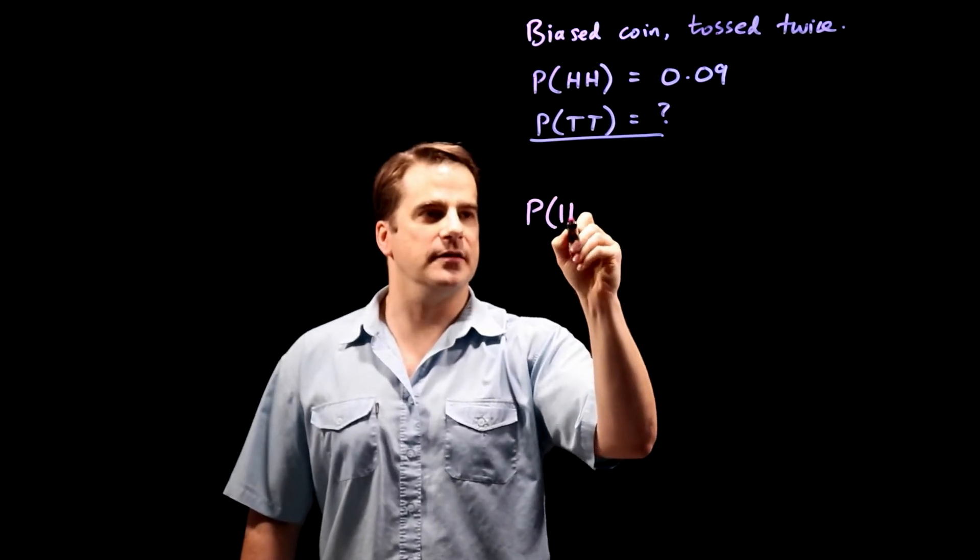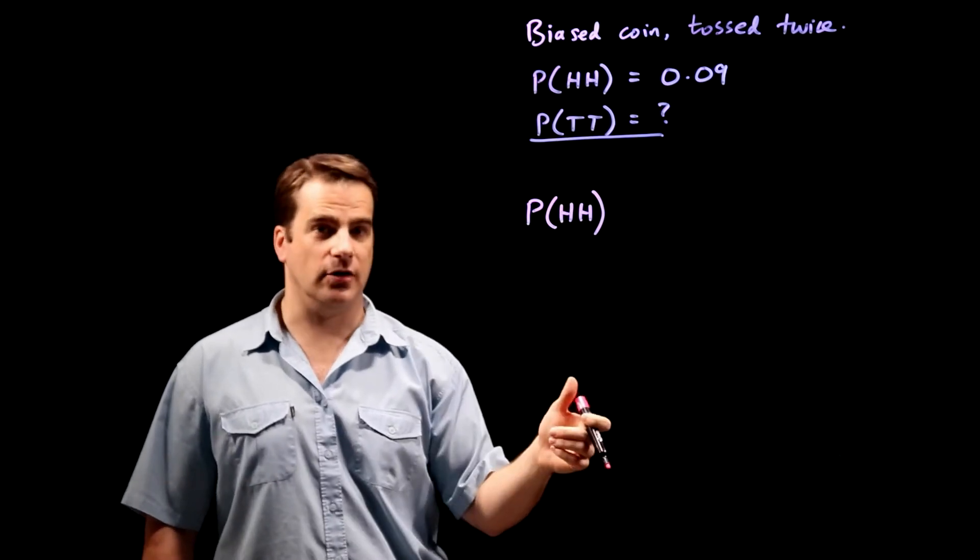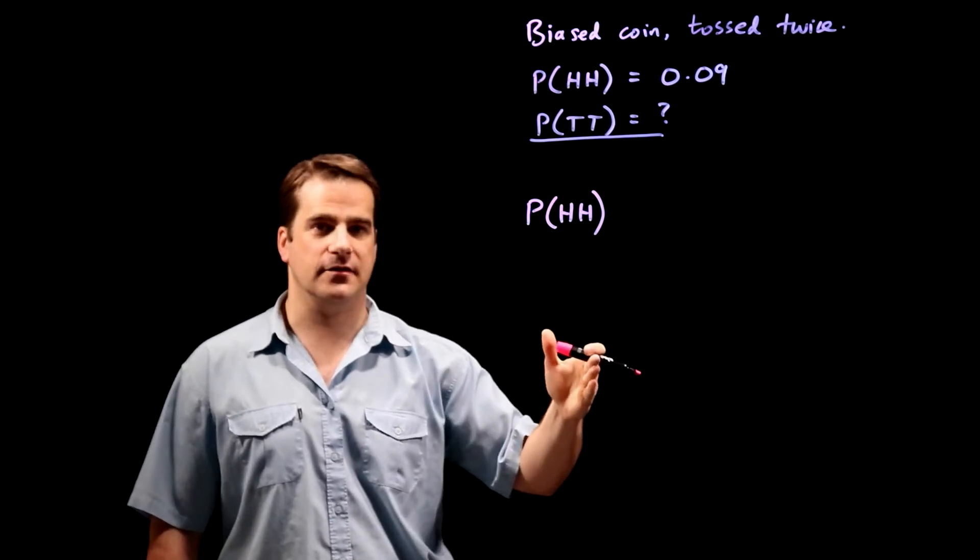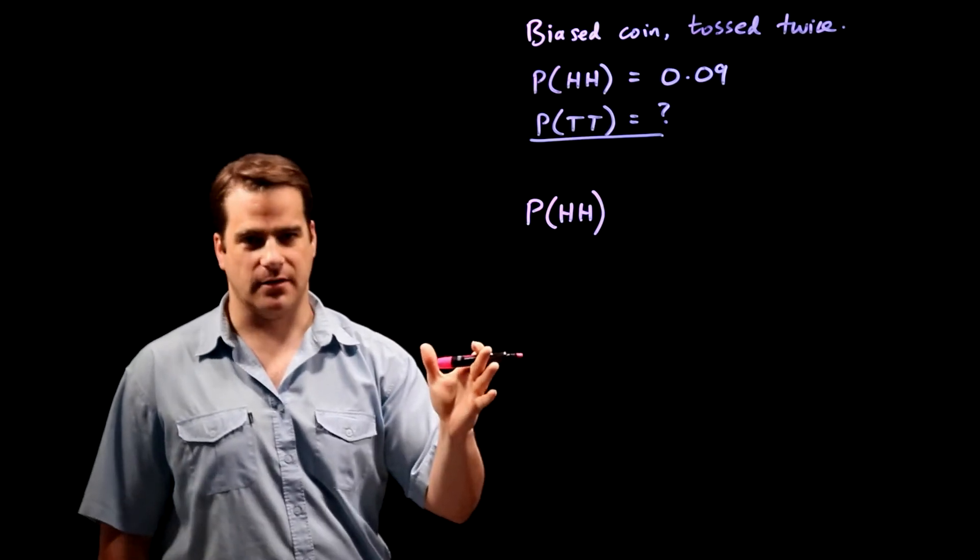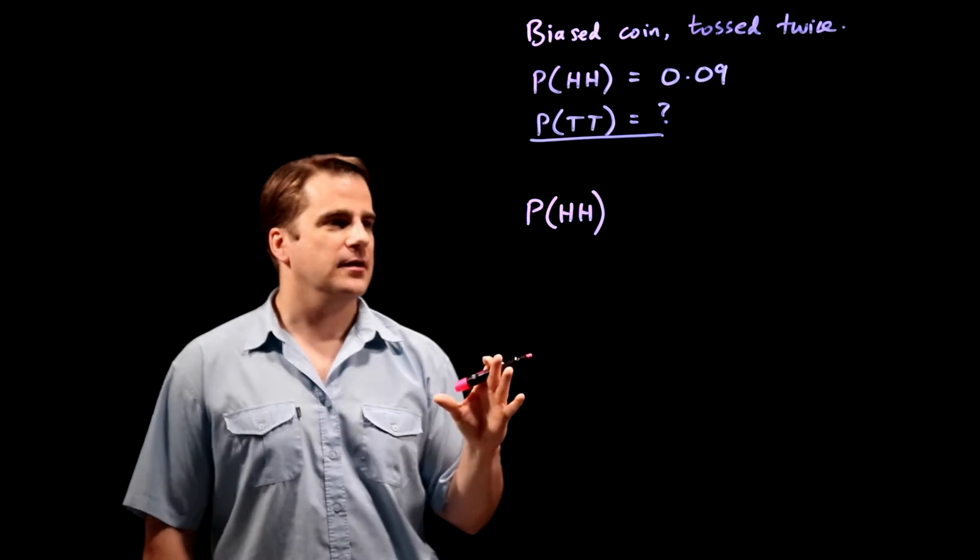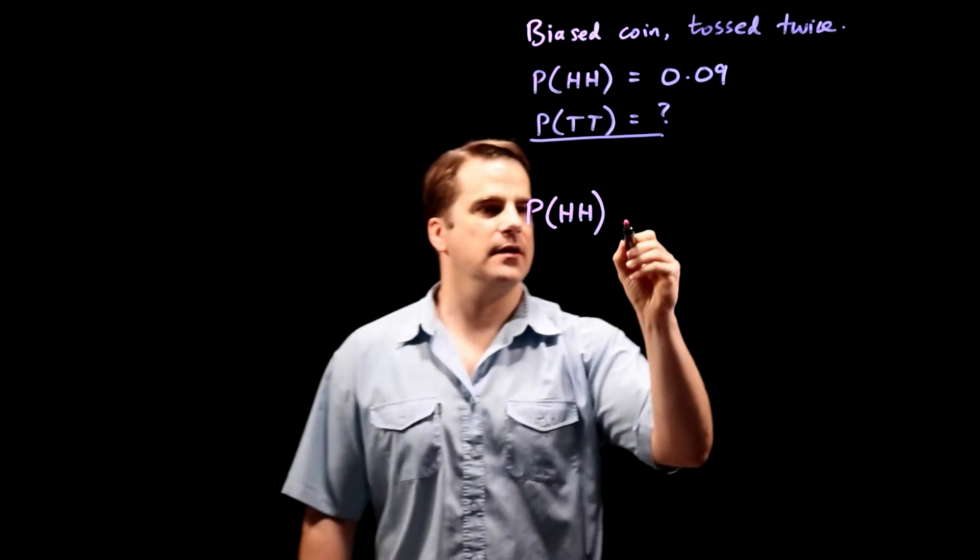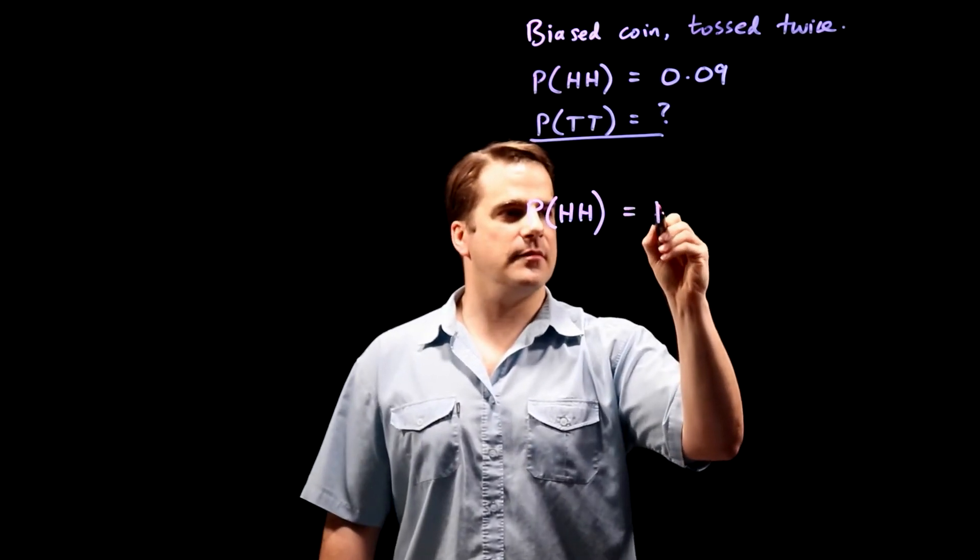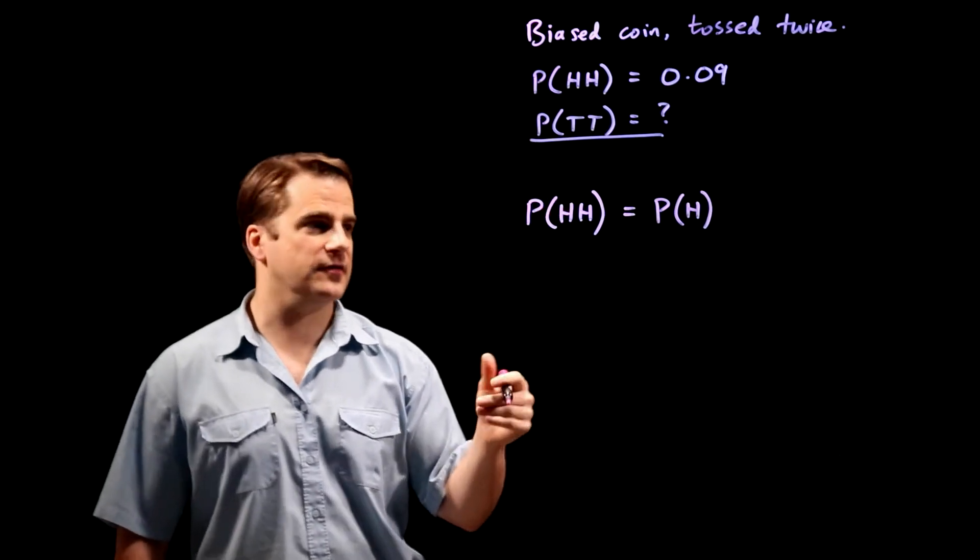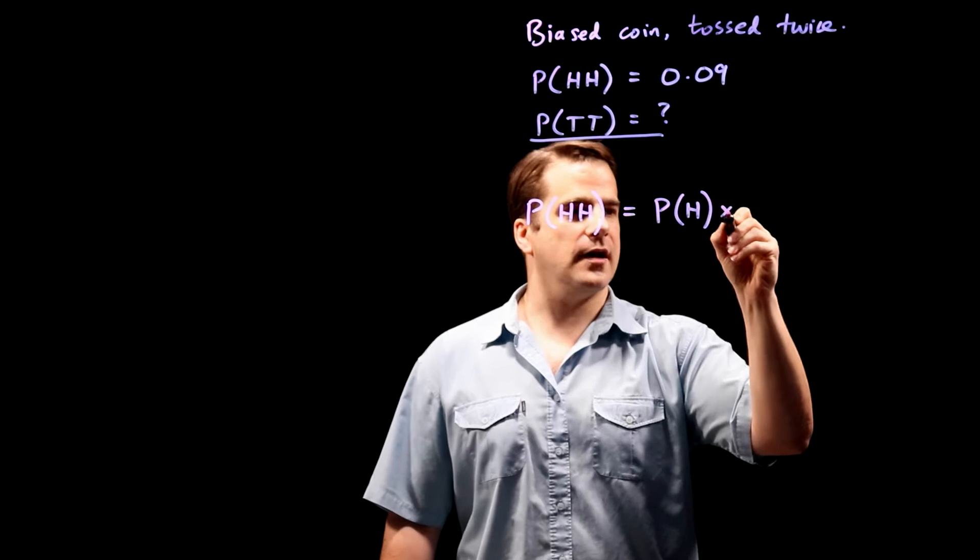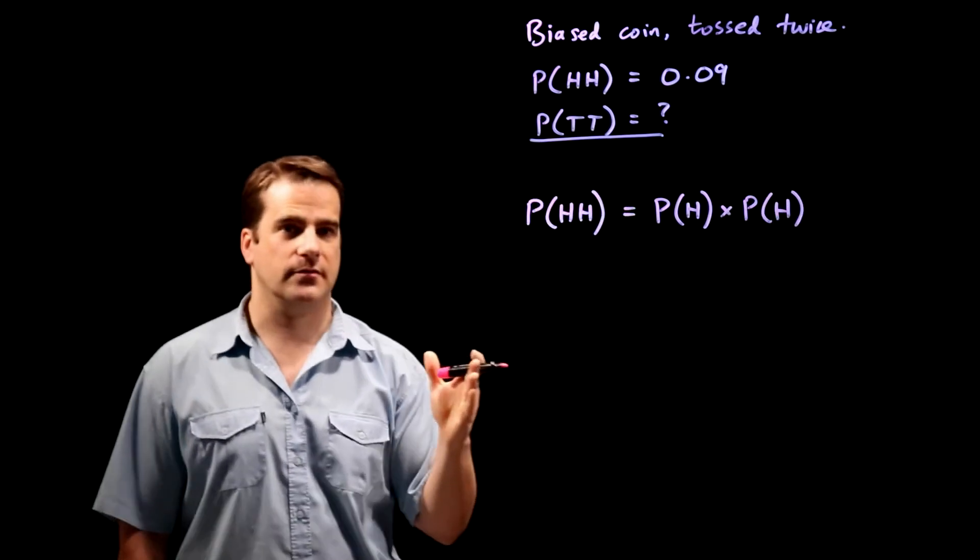So the probability of getting two heads, you're flipping a coin here and each toss or flip is unrelated to the previous one. It's probability with replacement if you like. So the probability of getting two heads is the same as the probability of getting a head with the first toss times by the probability of getting a head with the second toss.